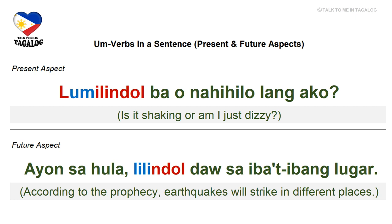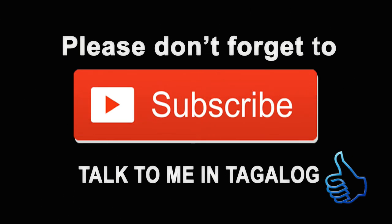Future aspect: Ayon sa hula, lilindol daw sa iba't ibang lugar — 'According to the prophecy, earthquakes will strike in different places.' Ayon means according to, hula is prophecy, lilindol means earthquake will strike, iba't iba is different, and lugar means place. Well, that's all for now. Thank you for watching — if you liked this video, please give it a thumbs up and subscribe to my channel. Salamat po!